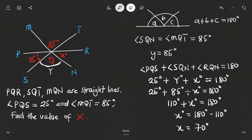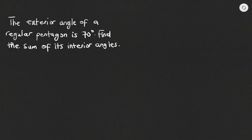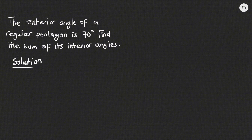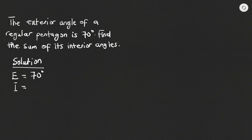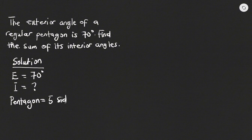Let's look at another example. The exterior angle of a regular pentagon is 70 degrees, and we have to find the sum of its internal angles. A pentagon is a five-sided polygon. I'll use E for the exterior angle and I for the interior angle.